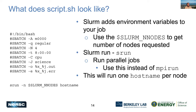Slurm also adds environment variables to your job, telling you things like the number of nodes allocated. The last part of the script is the srun command, which is how Slurm runs your job in parallel. You'll use srun instead of mpiexec or mpirun, because it allows Slurm to use the right libraries to make your job run in parallel. Here I'm running one instance per node using --ntasks-per-node to print out the NID hostname to confirm I'm on compute nodes.